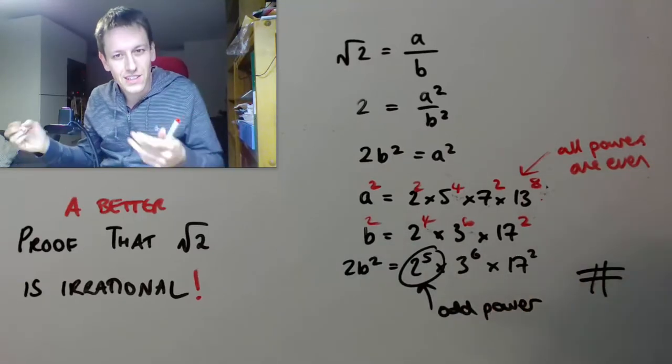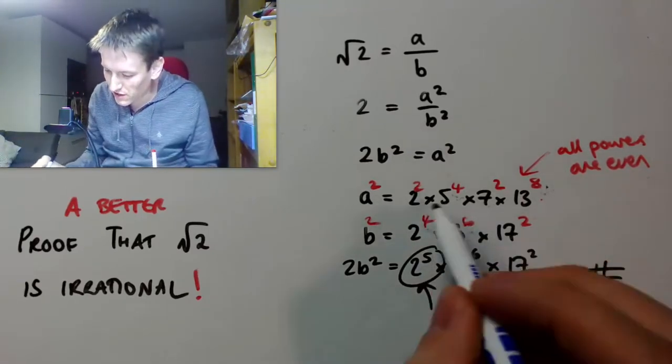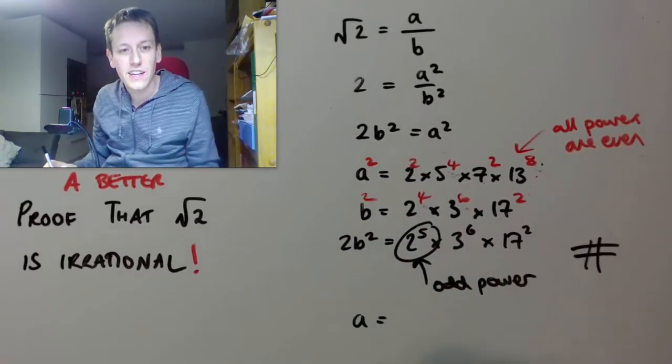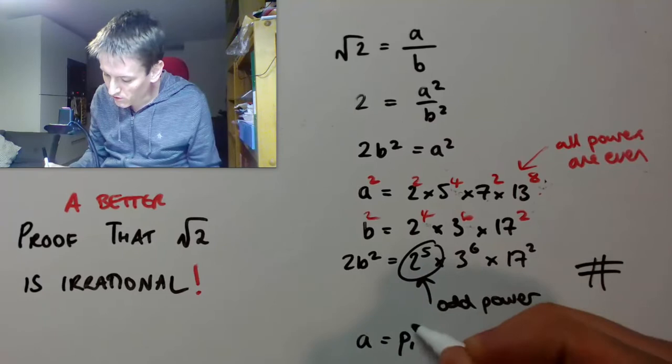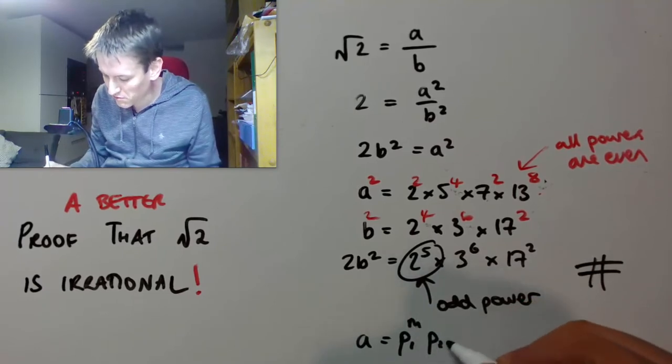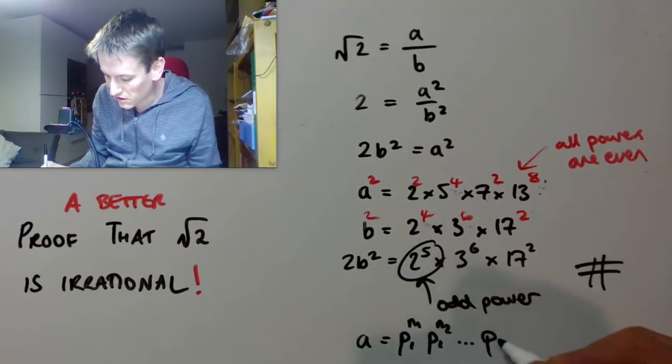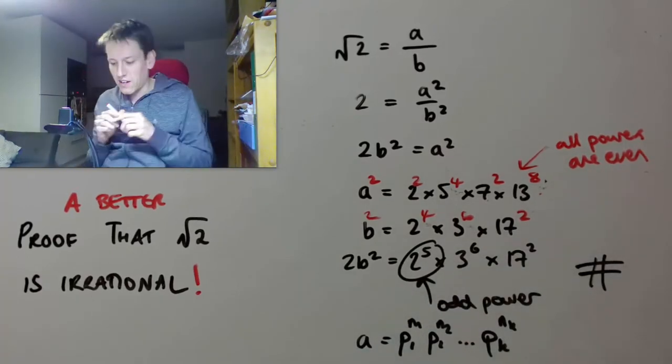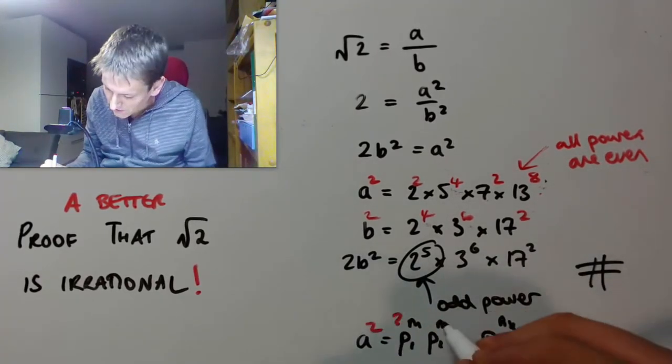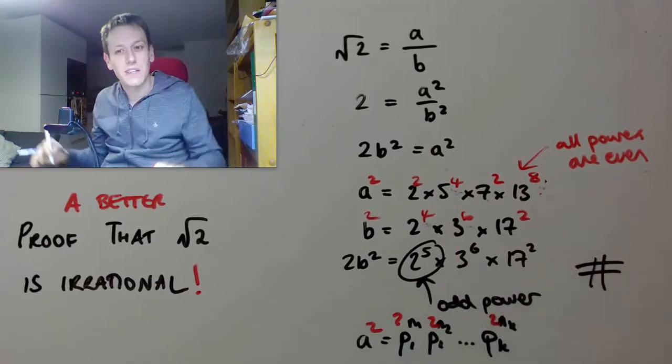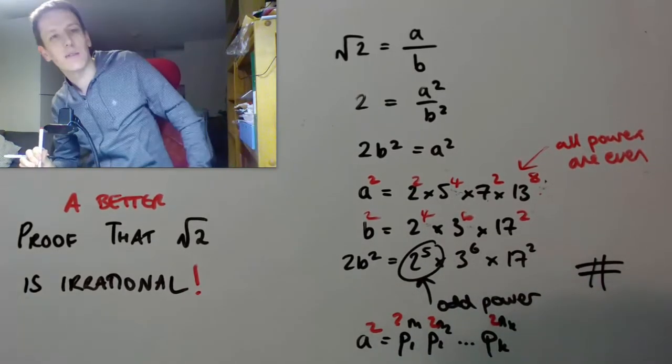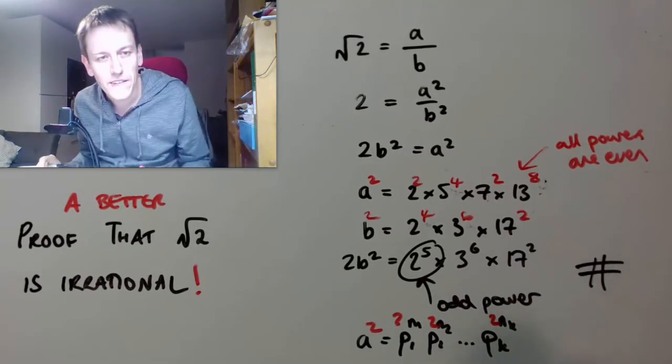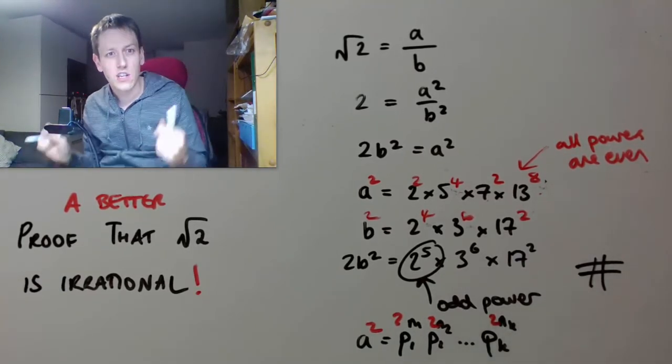To make this into a general proof, of course, you'd want to write these numbers down in general by doing something like writing a as prime 1 to the n1, prime 2 to the n2 up to prime k to the nk. And then a squared would have 2s up here. You could see how that argument generalizes. But there's no real need for us to write it down formally here. You can see very clearly that argument generalizes.